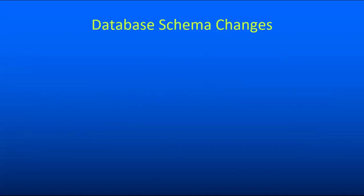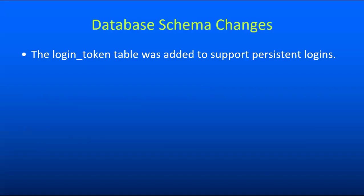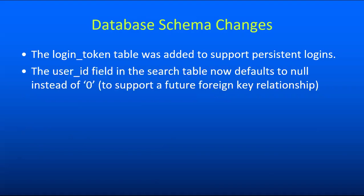We've also made some changes to our database schema. The biggest addition is a new table called login_token, which is used for the persistent login functionality added in this release. We've also changed the search table so that the user ID field defaults to null instead of zero. After this release, search rows that aren't associated with a user will have a null user ID instead of a user ID of zero, which makes a lot more sense.